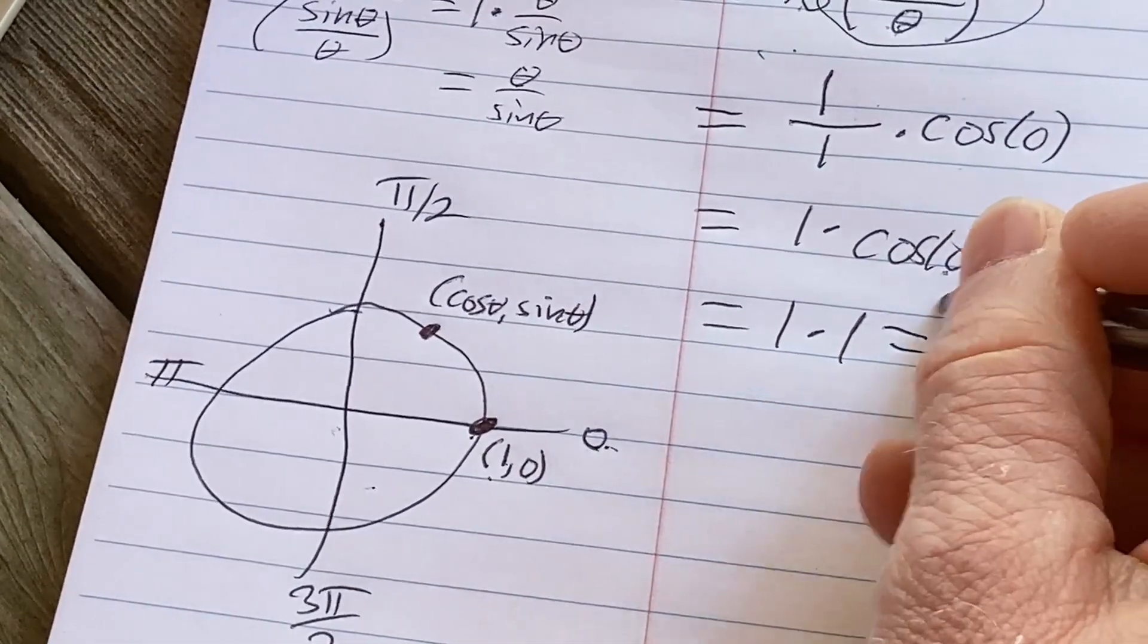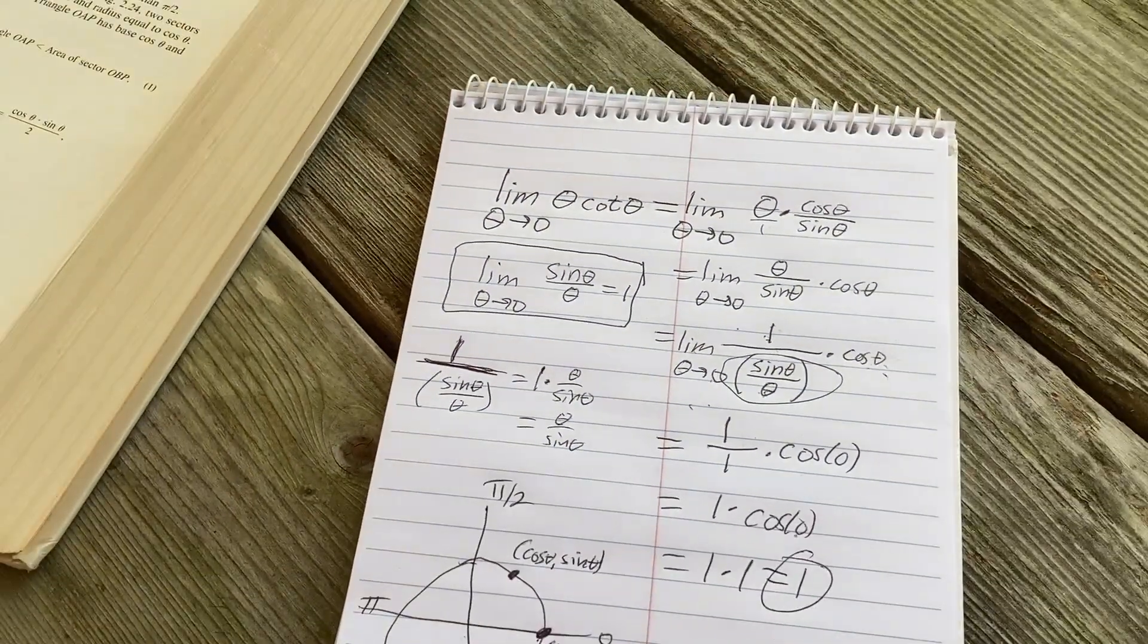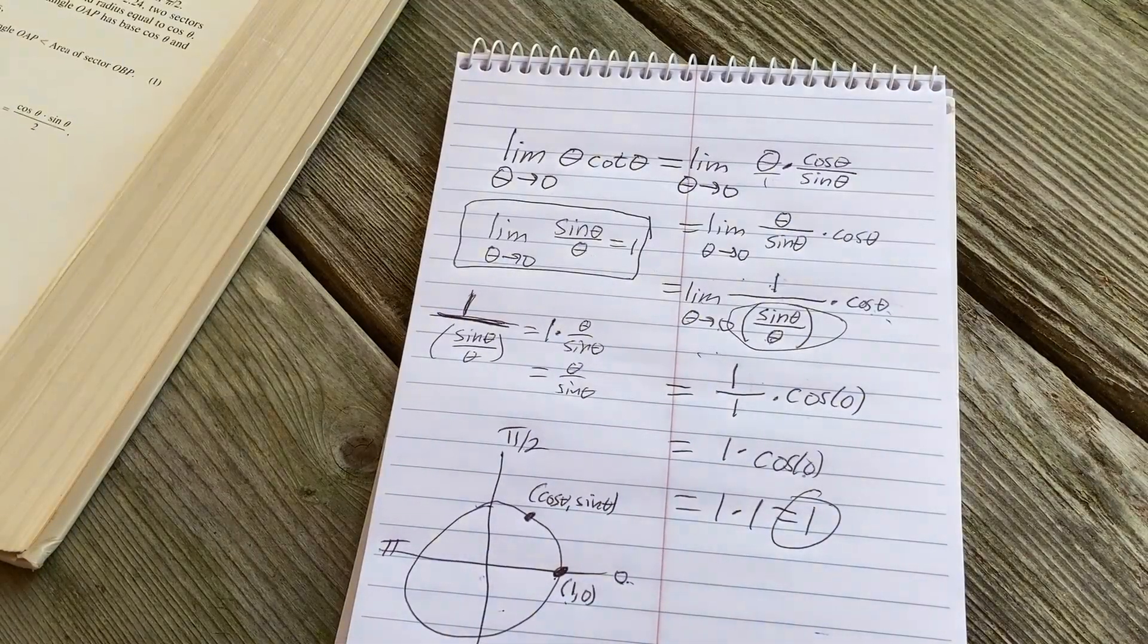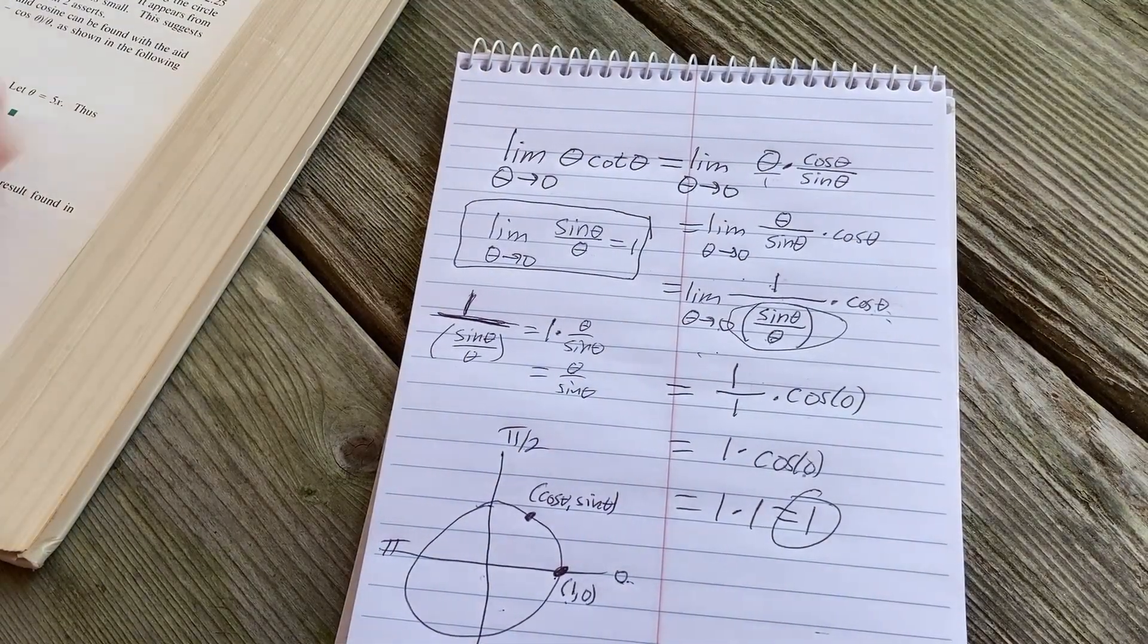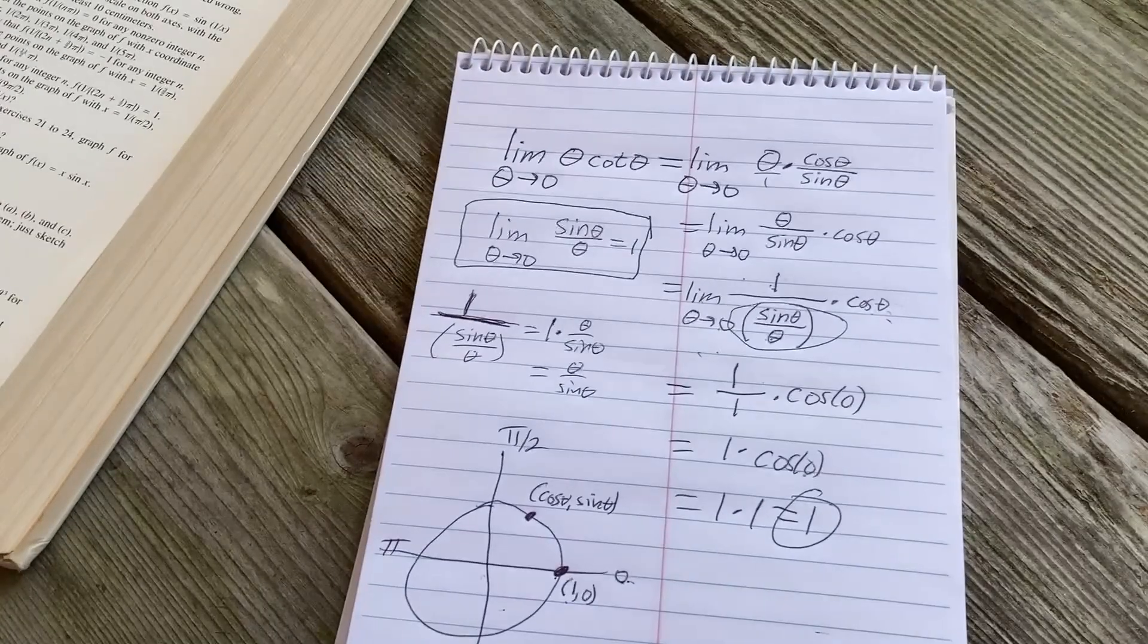So we get 1 times 1 and so that's equal to 1 and that's the answer. And this is an even numbered problem so I don't think the Stein book has the answers in the back of the book. No, why did I pick an even one?